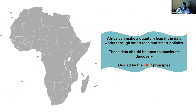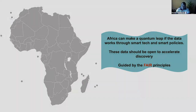Those kinds of services are really important for development in Africa. However, to do that we need data used in smart technologies and smart policies to guide their usage. These data need to be under the FAIR principle — findable, accessible, interoperable, and reusable — if we want them to be collaborative and the research to be reproducible. Thank you.